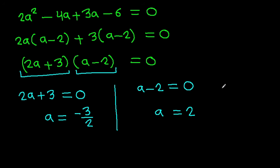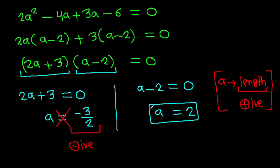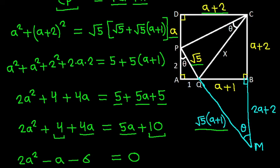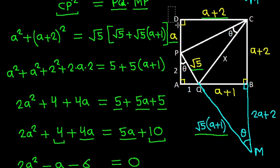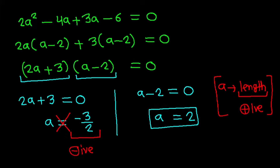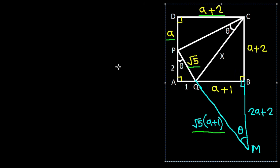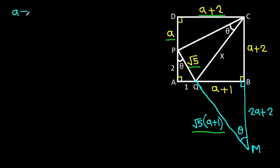From here, 2A minus 3 equals 0 gives A equals 3 over 2, and A minus 2 equals 0 gives A equals 2. Since A is a length it must be positive, and 3/2 is positive but we take A equals 2 as the valid solution.